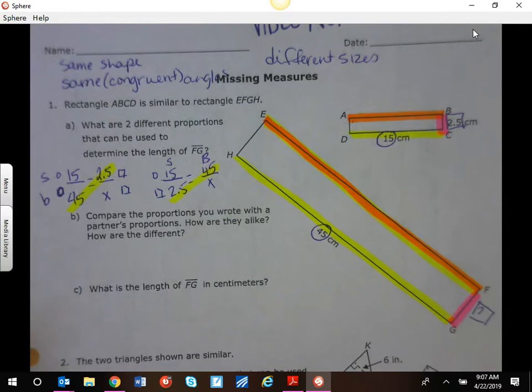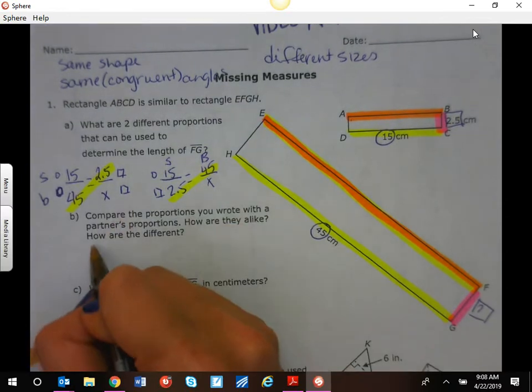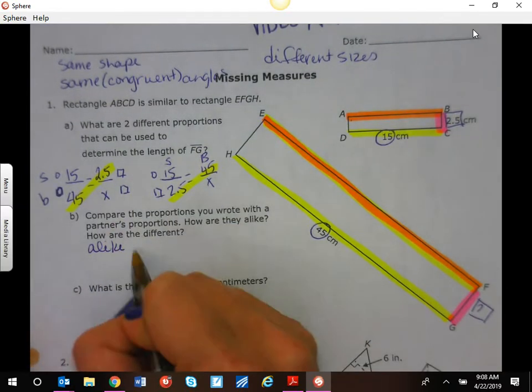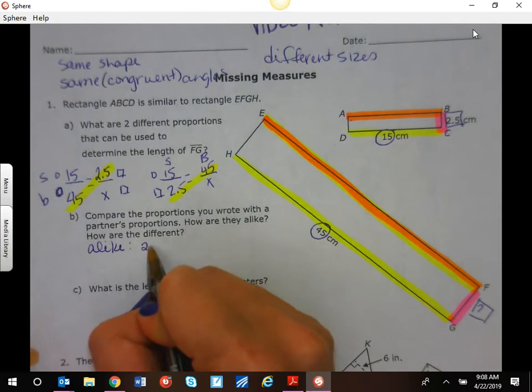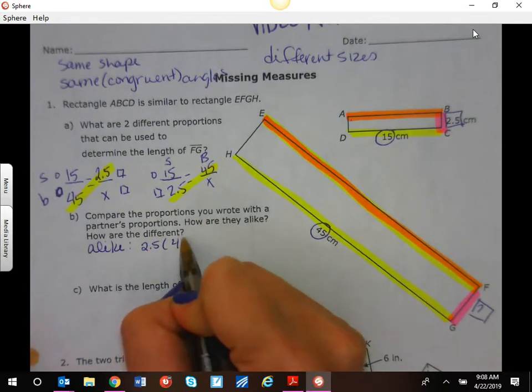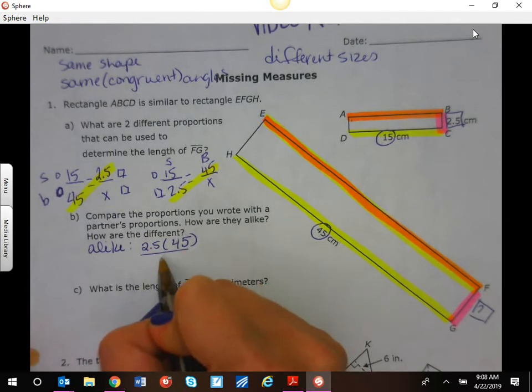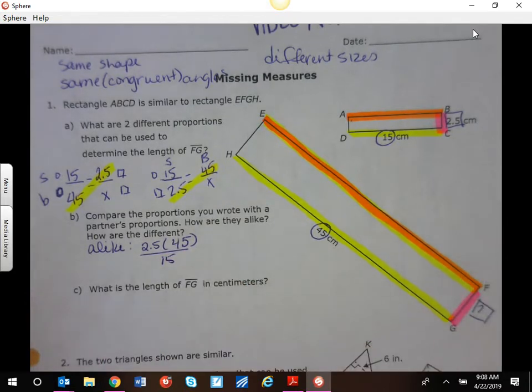How are they alike? How are they different? They are alike because it's still going to be 2.5 times 45 divided by 15. They're different in the order that you wrote it.